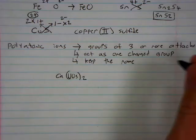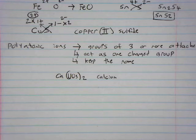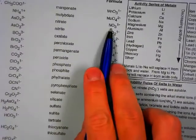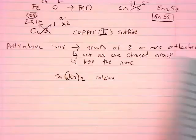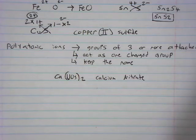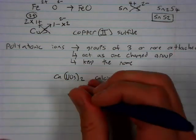So if I had something like this. Ca NO3 parentheses 2. The name of this is Ca is calcium. I would look up NO3. These are alphabetical. NO3 is nitrate. This is just calcium nitrate.